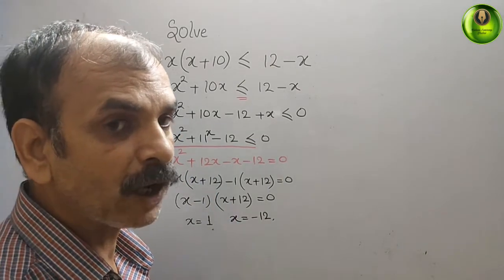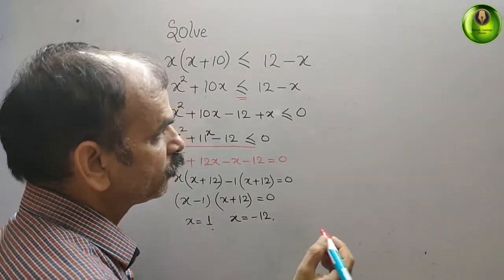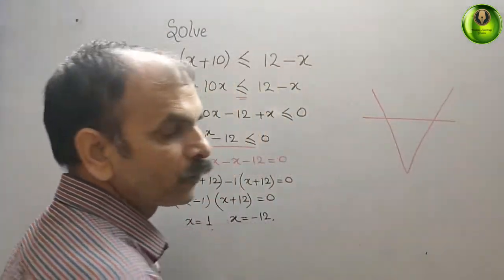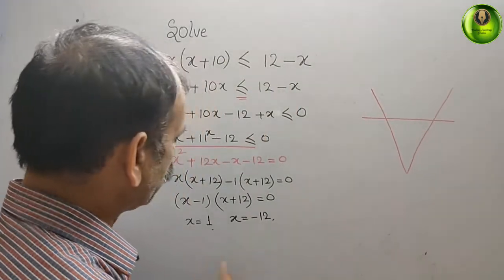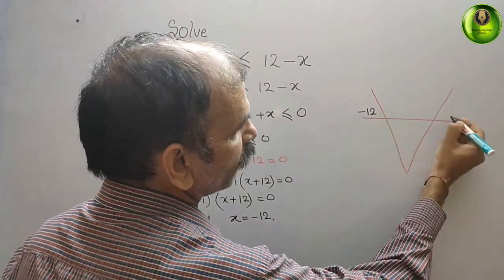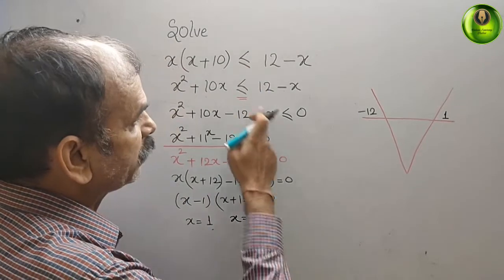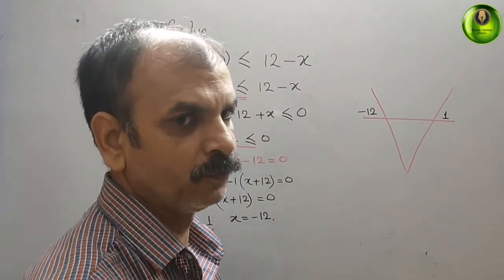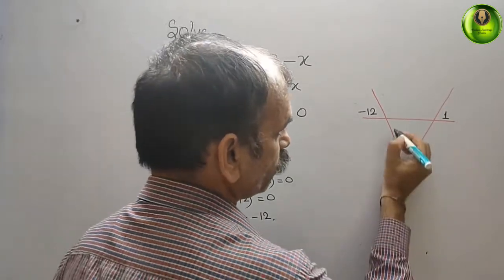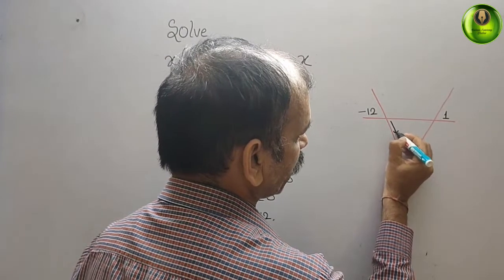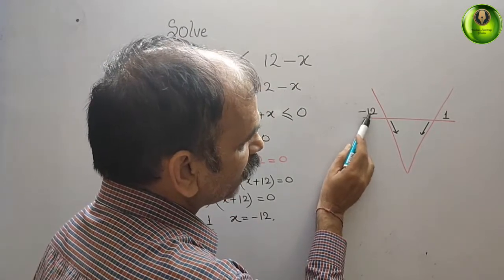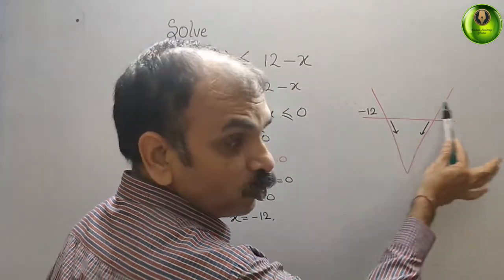Since the coefficient of x² is positive, we get a parabola with a minimum point, so we draw it opening upward. The two roots are x = 1 and x = -12, with -12 to the left of 1. The inequality is less than equal to 0, so we move towards the negative side — the region between the roots.